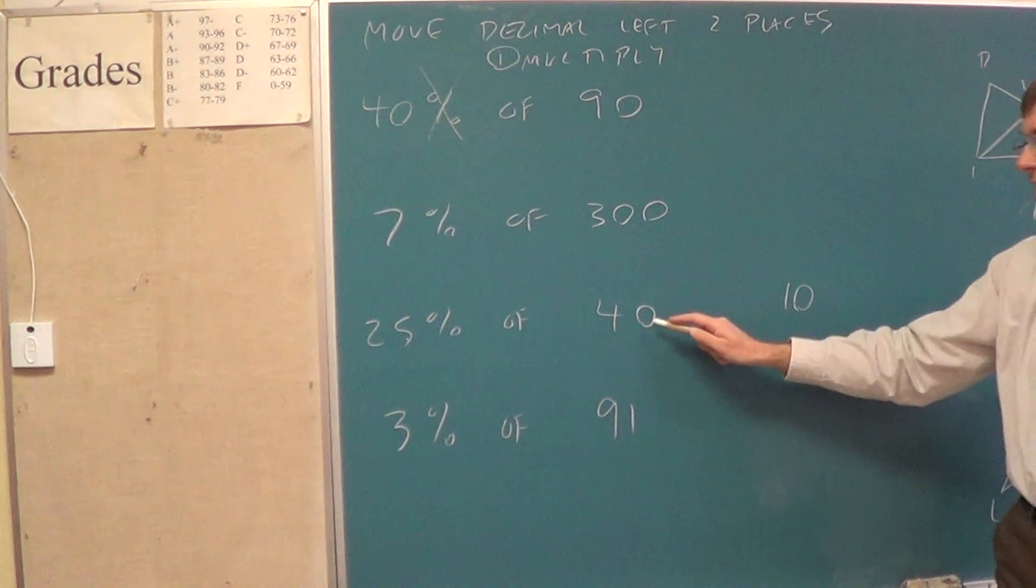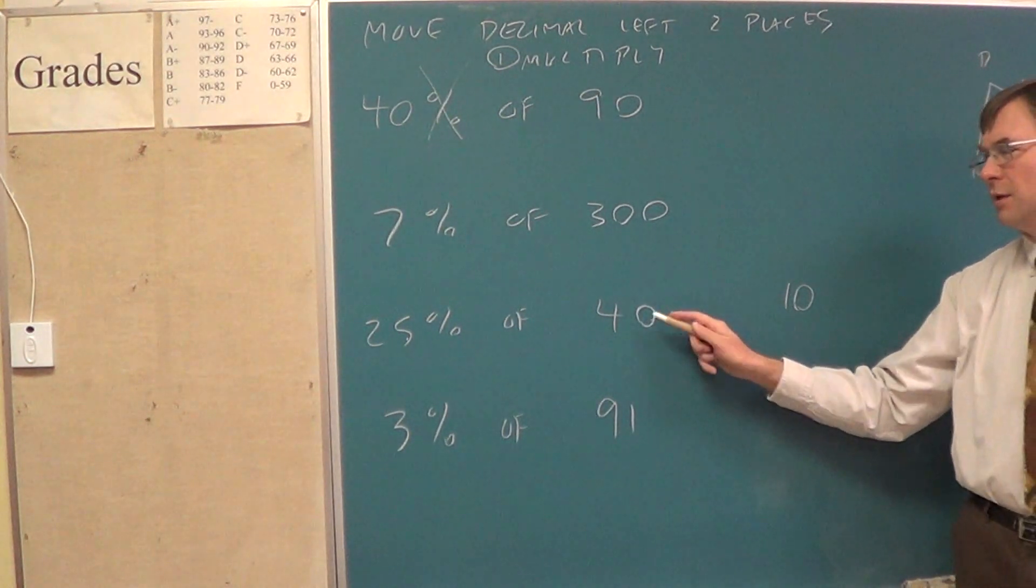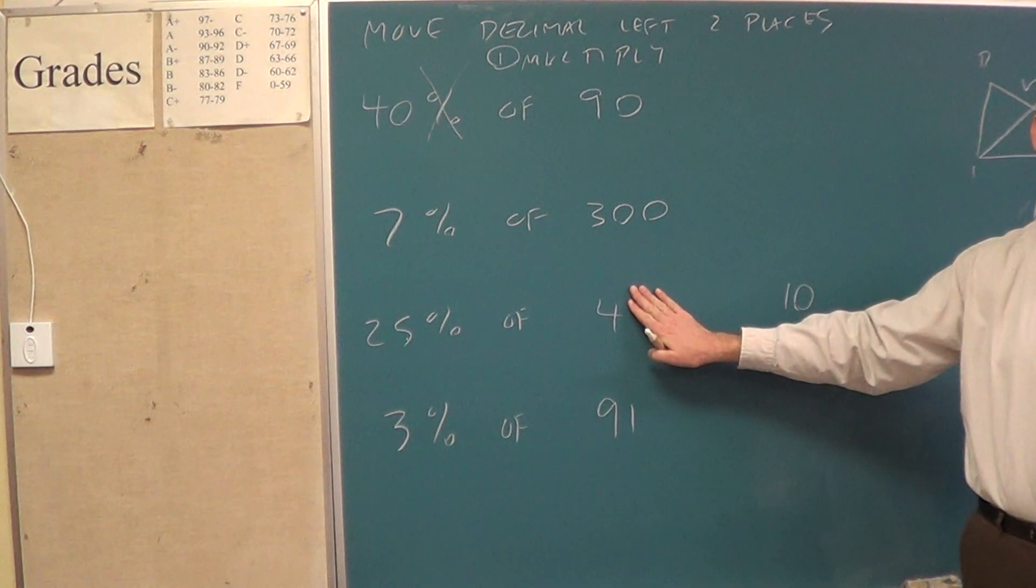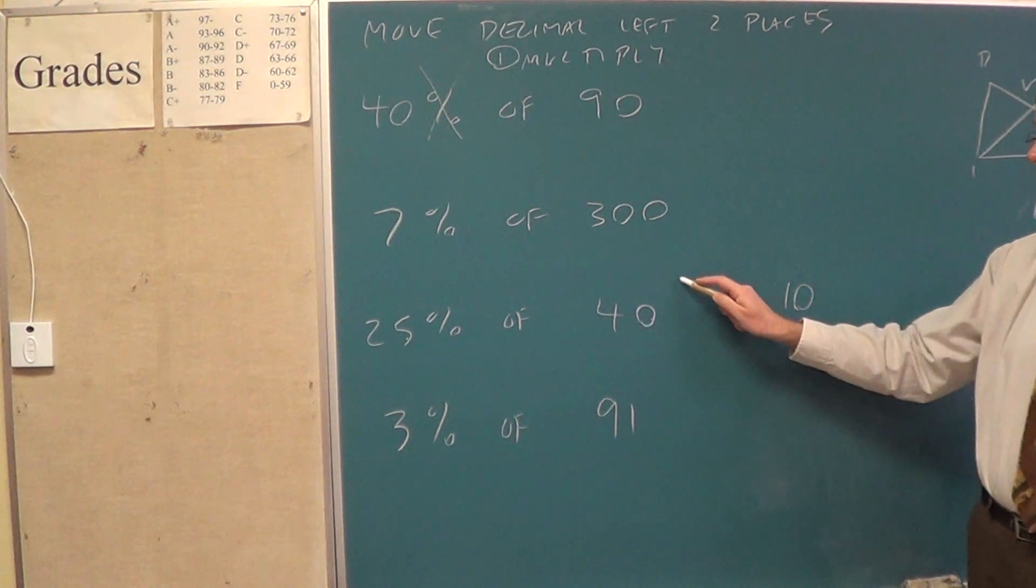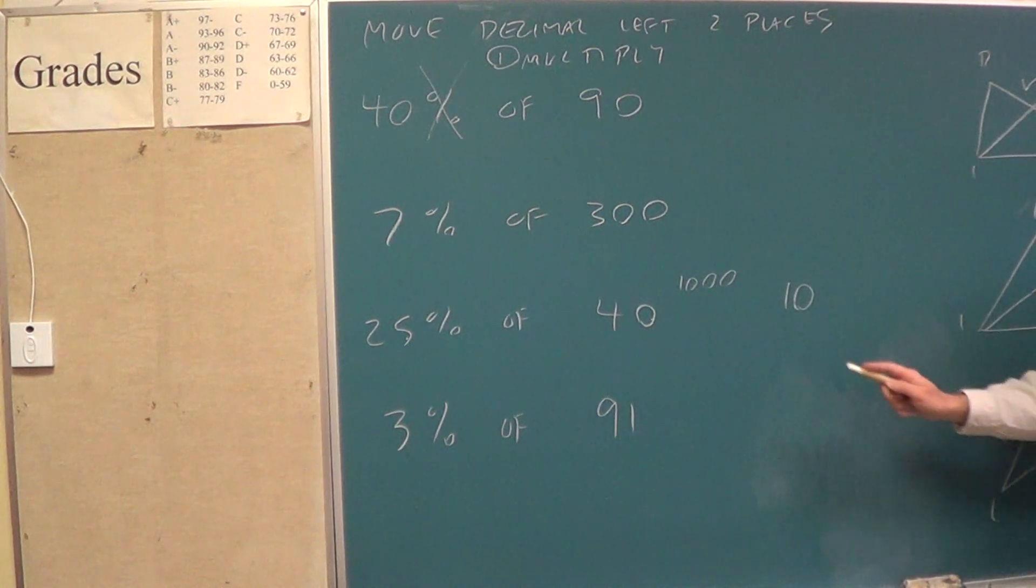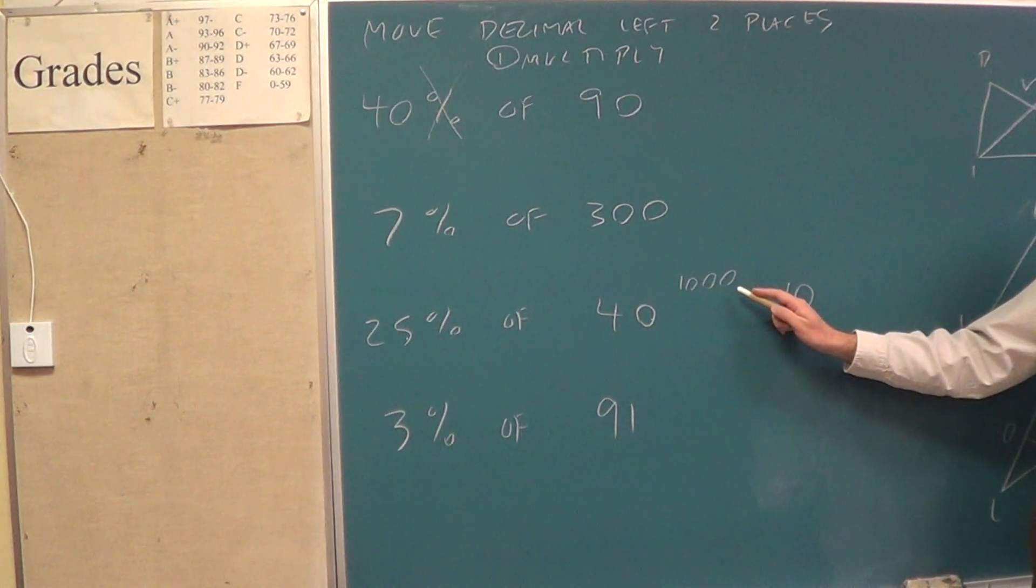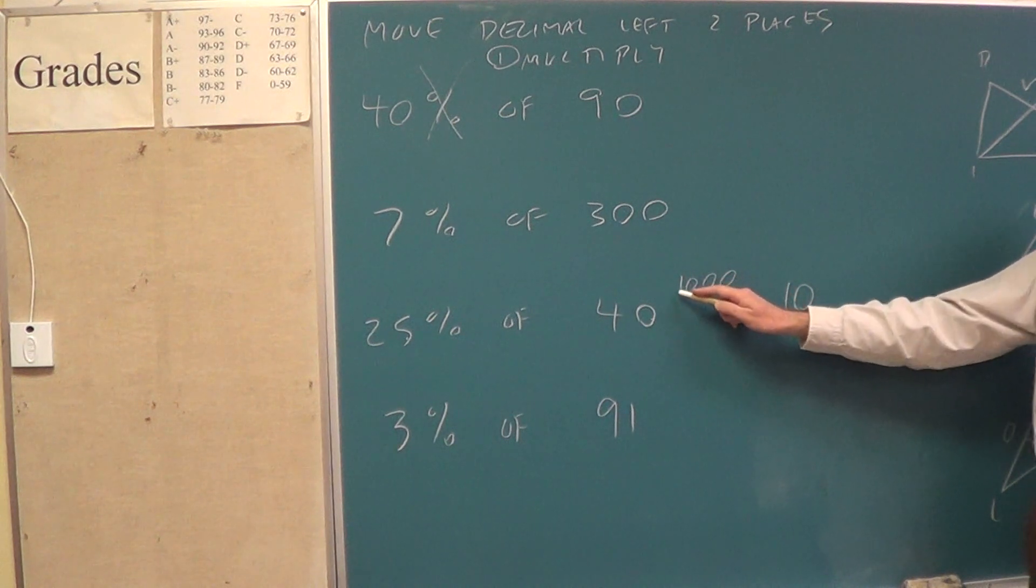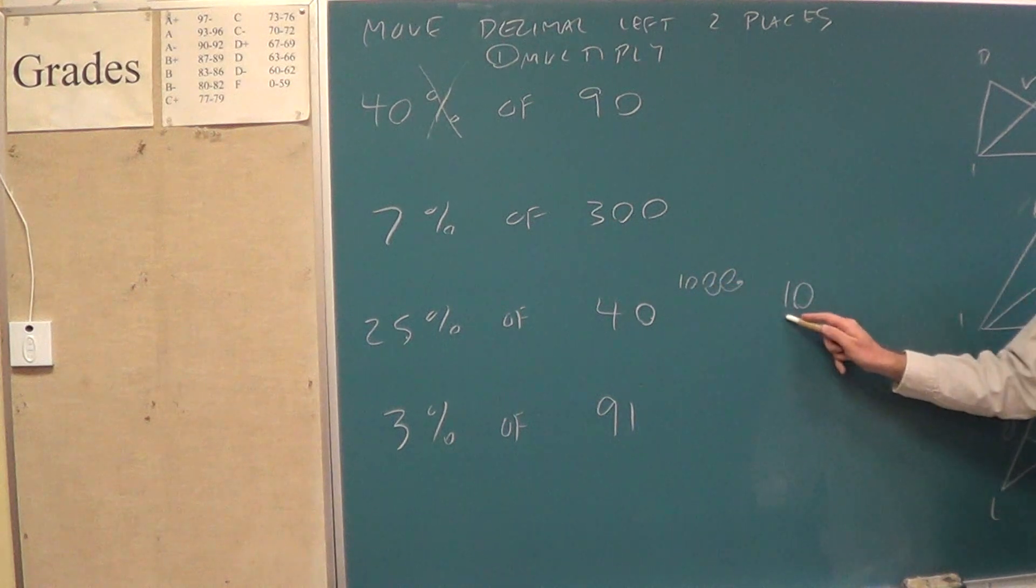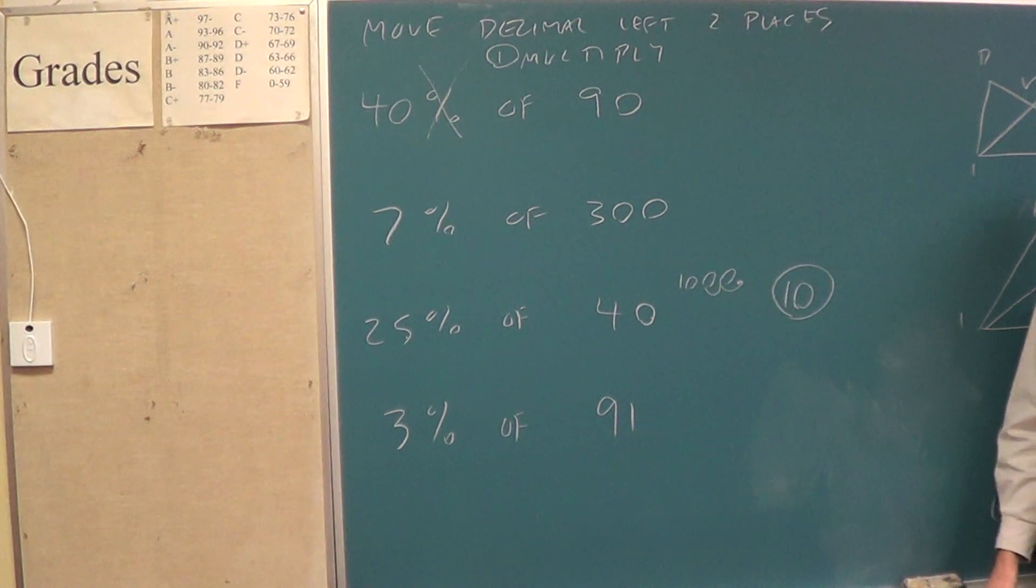So, here, if you take 25 times 40. 25 times 40 is like 25 times 4, which is 100, but with a bonus 0. So, when you first multiply, you're thinking about 1000. Where's the decimal in this? It's invisible, but where is it? It's at the very end. And, if you bounce it left twice, that's a way you could get 10.